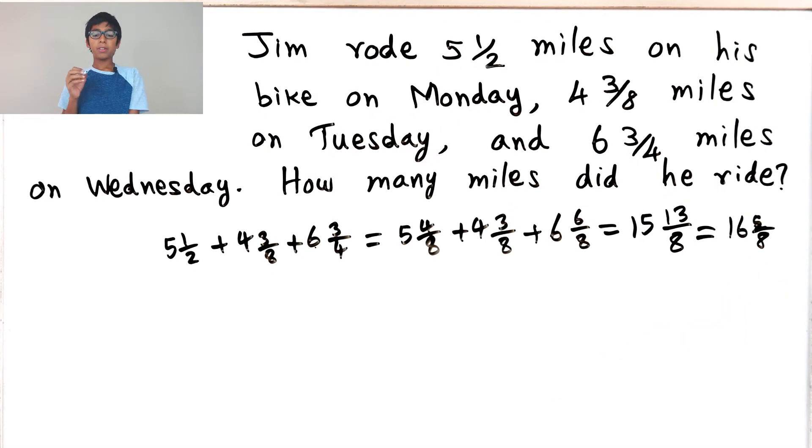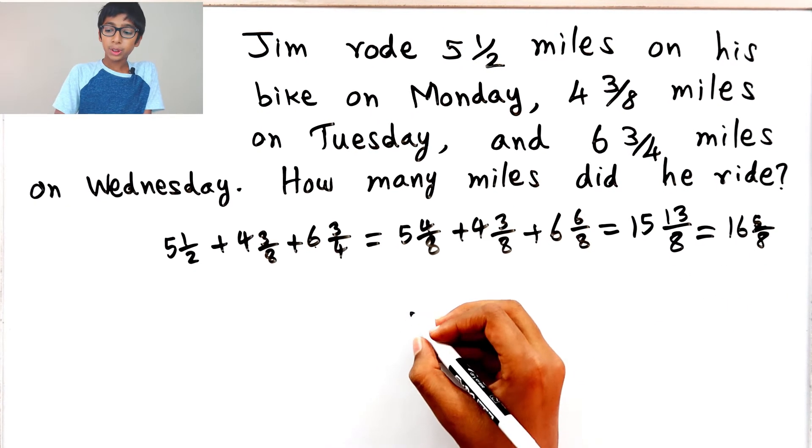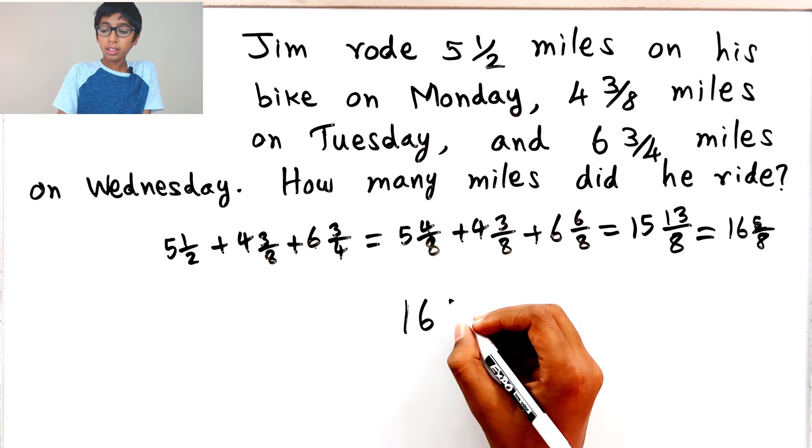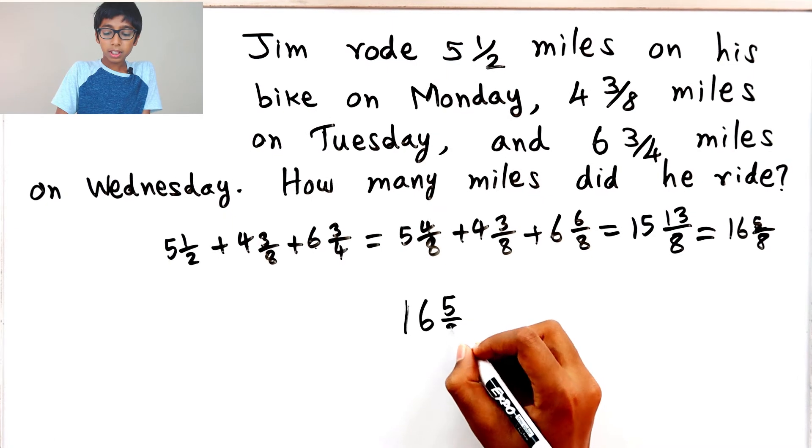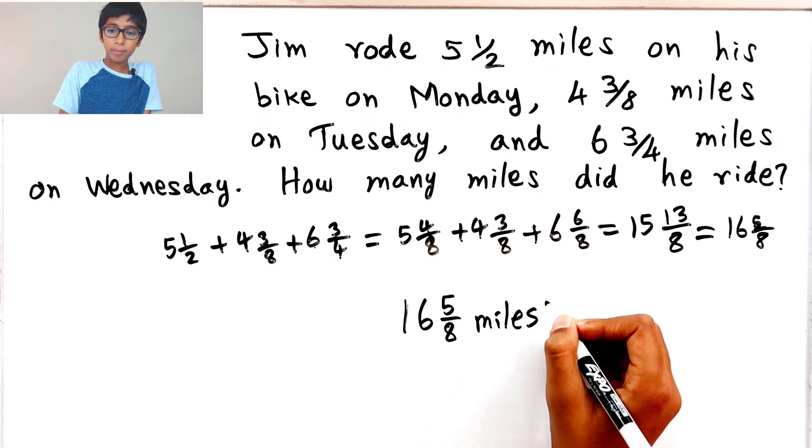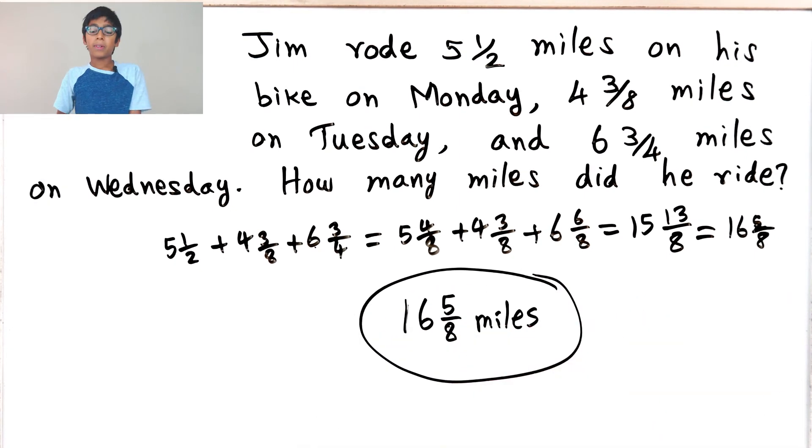So that means the answer is Jim rode 16 5/8 miles on all three days.